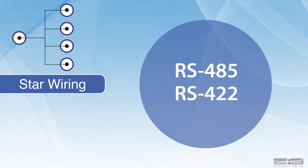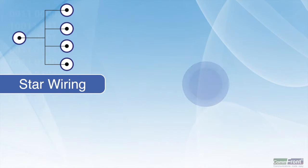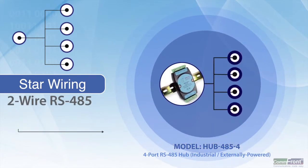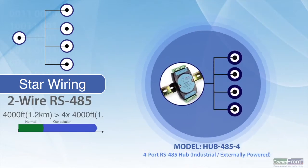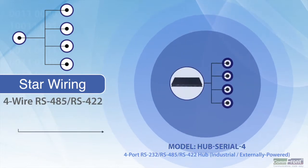However, star wiring is inevitable in many places. For example, linking from one central location to multiple buildings. With our very well-engineered hubs, the star wiring configuration is more than just possible. It makes the system much more robust and reliable.